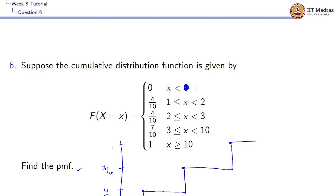Exactly at x = 1, the probability is 4/10, and before that it is 0. For x less than 1, the probability of x equals 0, since until x = 1 we don't have any cumulative probability. Exactly at x = 1 we will be having a probability of 4/10, which means P(X = 1) = 4/10. Until x = 2 and until x = 3, we don't have any additional probability, so P(X = 2) = 0.